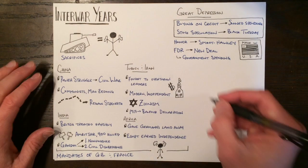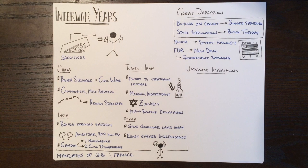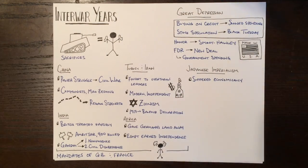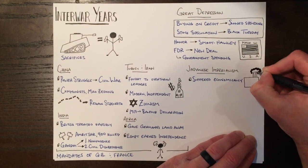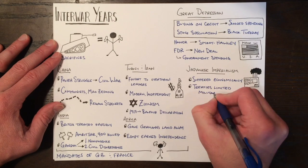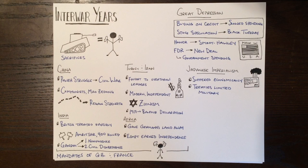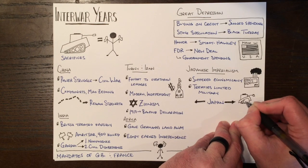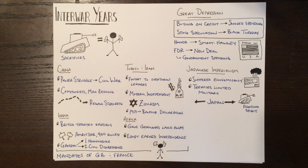In the Pacific, the Japanese would also suffer economically. They relied on selling manufactured goods because of the lack of natural resources. When countries started to place high tariffs on imports, the Japanese economy suffered. The leaders of Japan knew that they needed to expand to offer themselves access to raw materials. As this happened, their military became stronger and more powerful. They started to promote the fighting spirit, and this would make their military a fierce adversary for anyone.